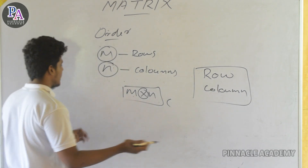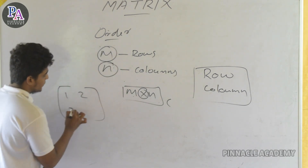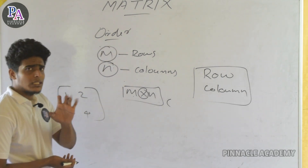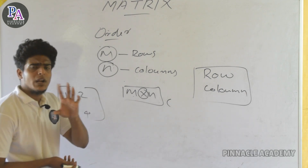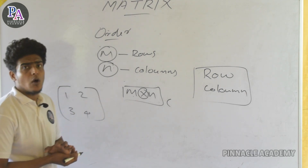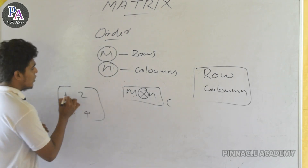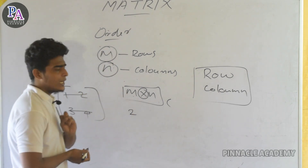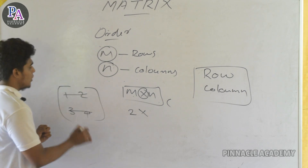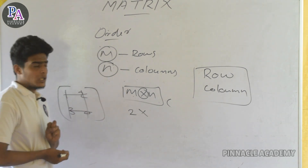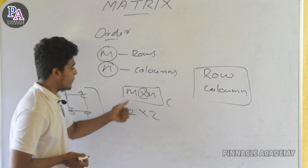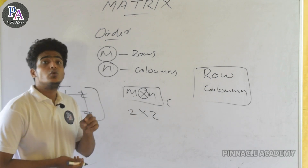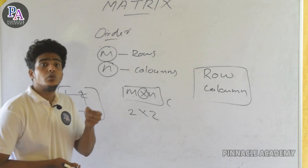We are going to write an example matrix: 1, 2, 3, 4. This is the matrix. There are four elements. What is the order of this matrix? In this matrix, you can count 2 rows and 2 columns — so the order is 2 by 2, written as 2×2.